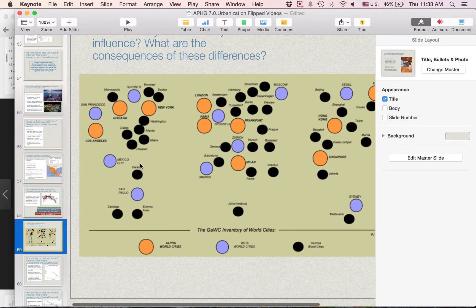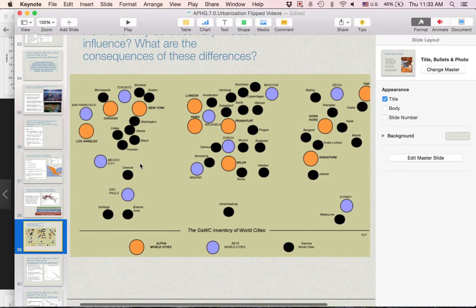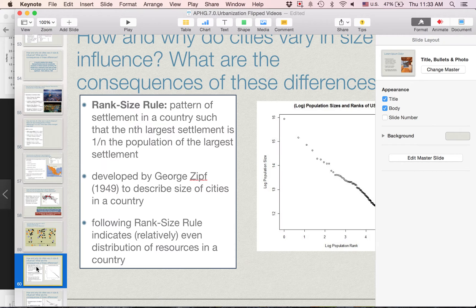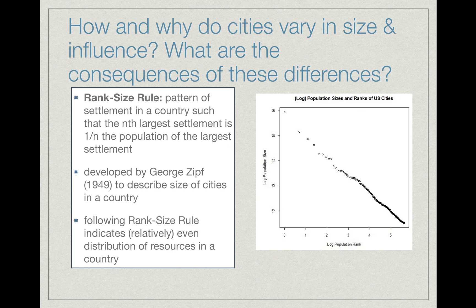So in the second part of this video, we have a representation of the alpha world cities, beta world cities, and gamma world cities. Now essentially, the opposite of a country that has a primate city is a country that follows what's known as rank-size rule.